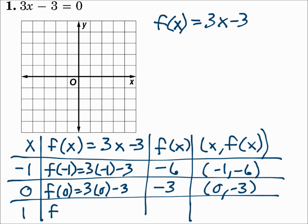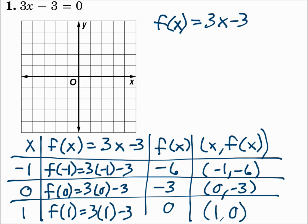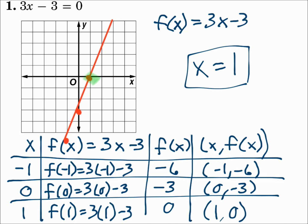When x is 1, find f of 1, which is 3 times 1 minus 3. 3 times 1 is 3, and 3 minus 3 is 0. So we have the point 1 comma 0. Now let's plot those points: negative 1, negative 6 goes just off the graph; 0, negative 3 is right there; and 1, 0 is right there. Connect the dots. The x-intercept is right there with the x value of 1, so x equals 1. That's your solution and your final answer.